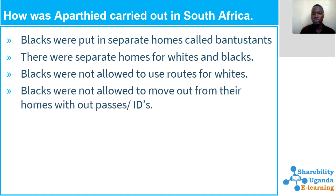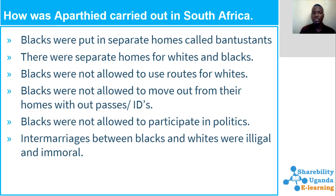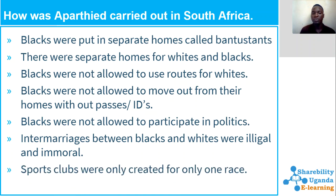Blacks were not allowed to participate in politics, so everything was decided by the Dutch — they would elect the president without considering Africans, which was a very bad disservice. Intermarriages between blacks and whites were illegal and immoral. In case a black person was found married to a white person, that would be an automatic death sentence.